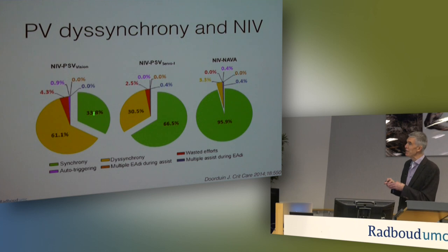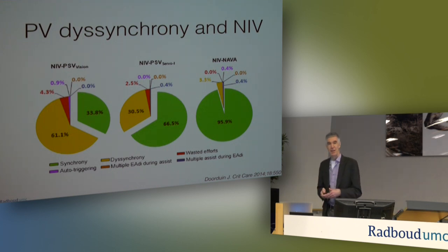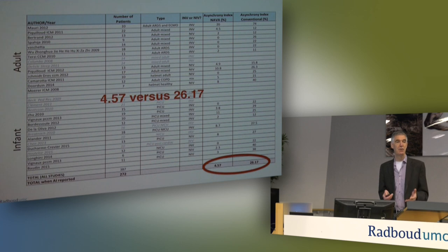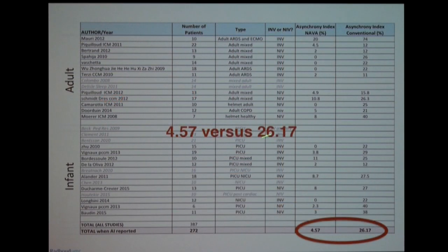Things are even worse in non-invasive ventilation, and I think we all realize that. This is a study from our own department. You can see that the amount of asynchrony with a dedicated non-invasive machine is actually huge. When we used a typical ICU ventilator it was still very large. But when we changed from pressure support to NAVA, you see a tremendous decrease in the amount of asynchrony. A slide from Jennifer Beck comparing synchrony and asynchrony between NAVA and conventional ventilation in adults and infants shows that the amount of asynchrony in NAVA is about 5%, compared to about 26% in conventional ventilation — a huge difference. Most of us who work with NAVA in everyday practice recognize this, though NAVA is not yet perfect; double-triggering may be slightly more prevalent with NAVA.